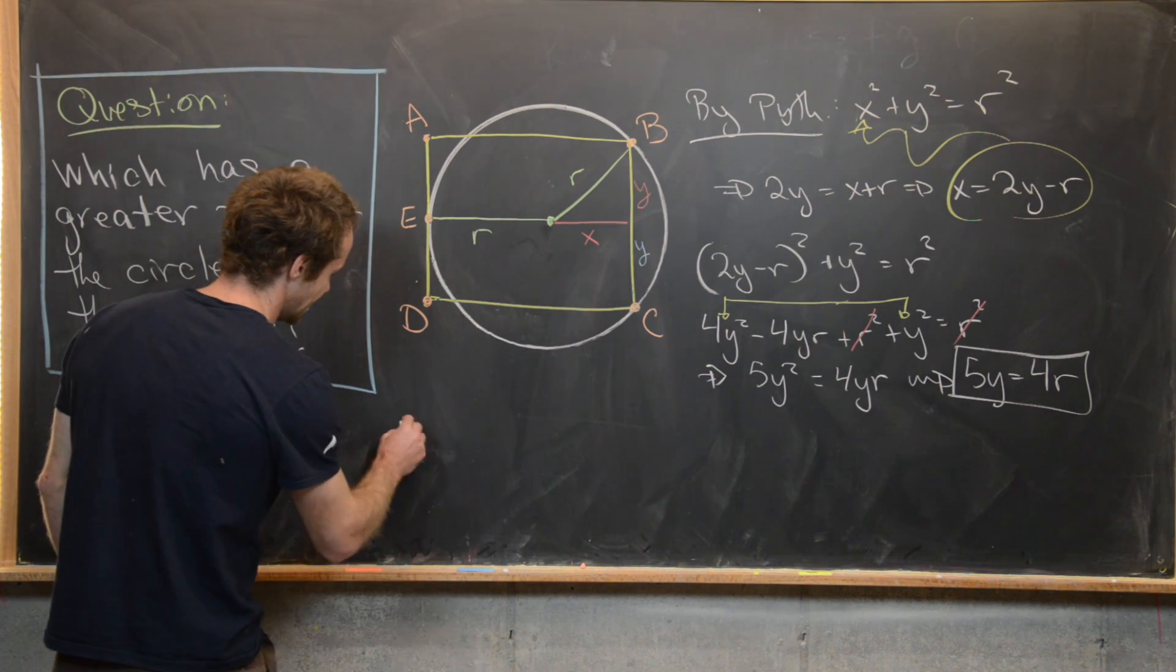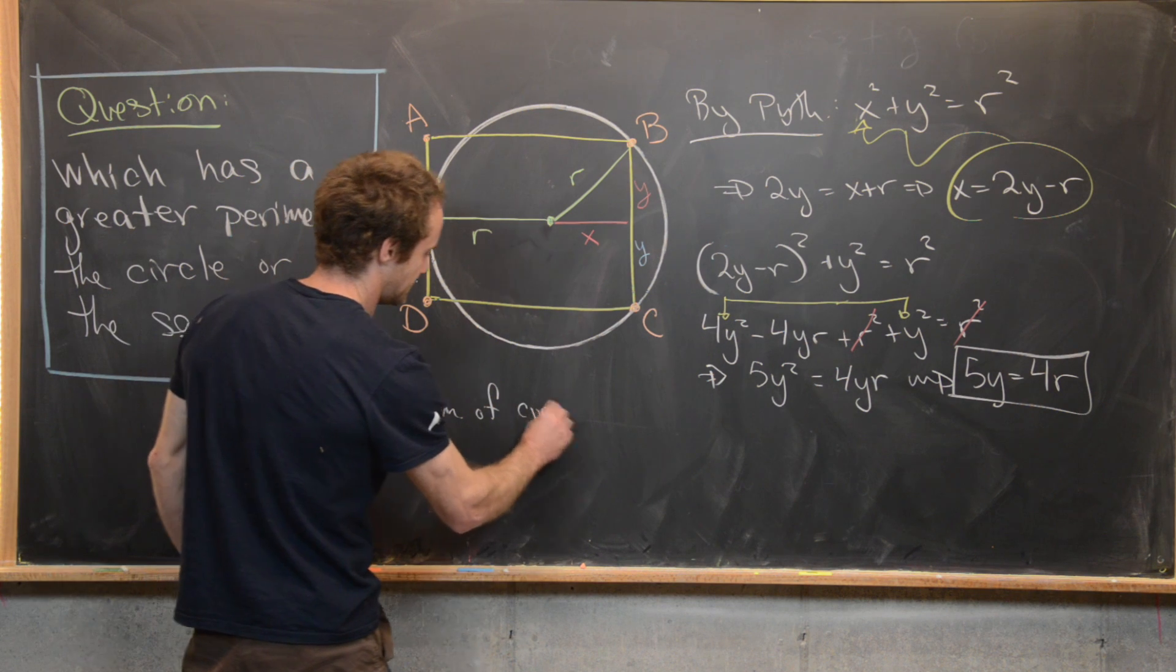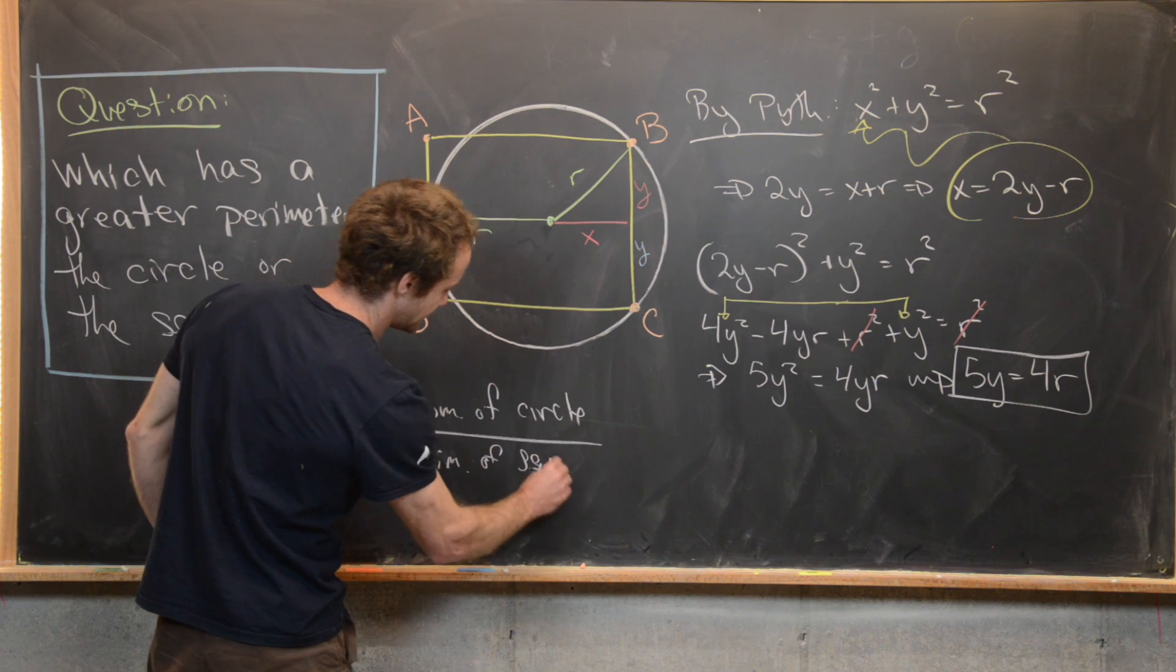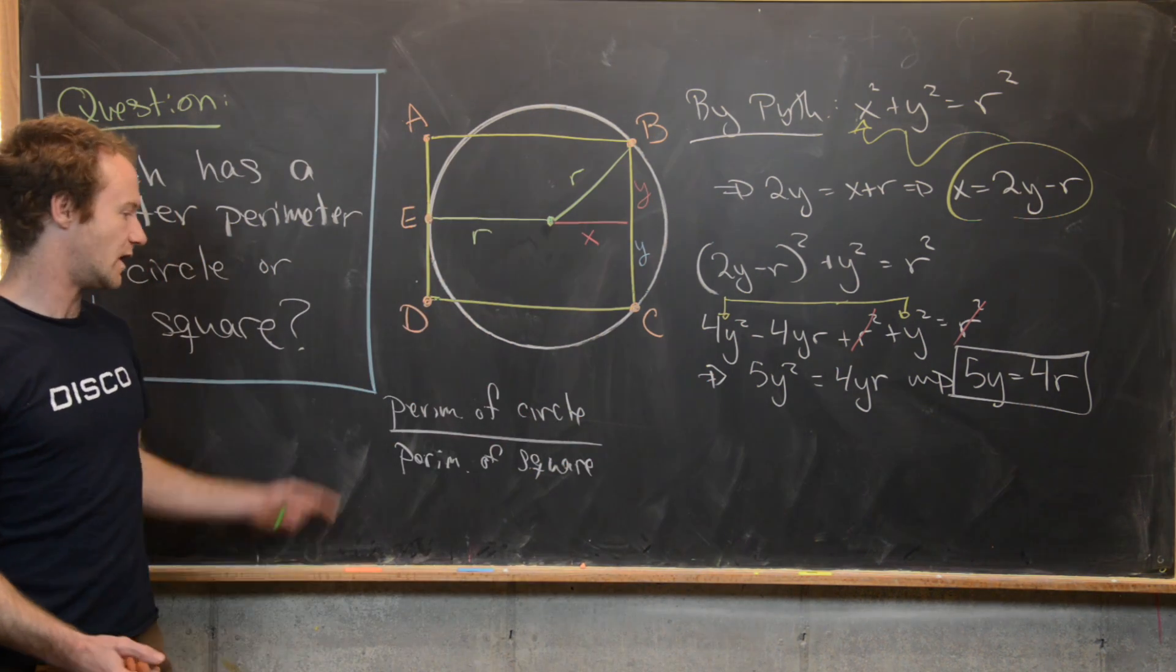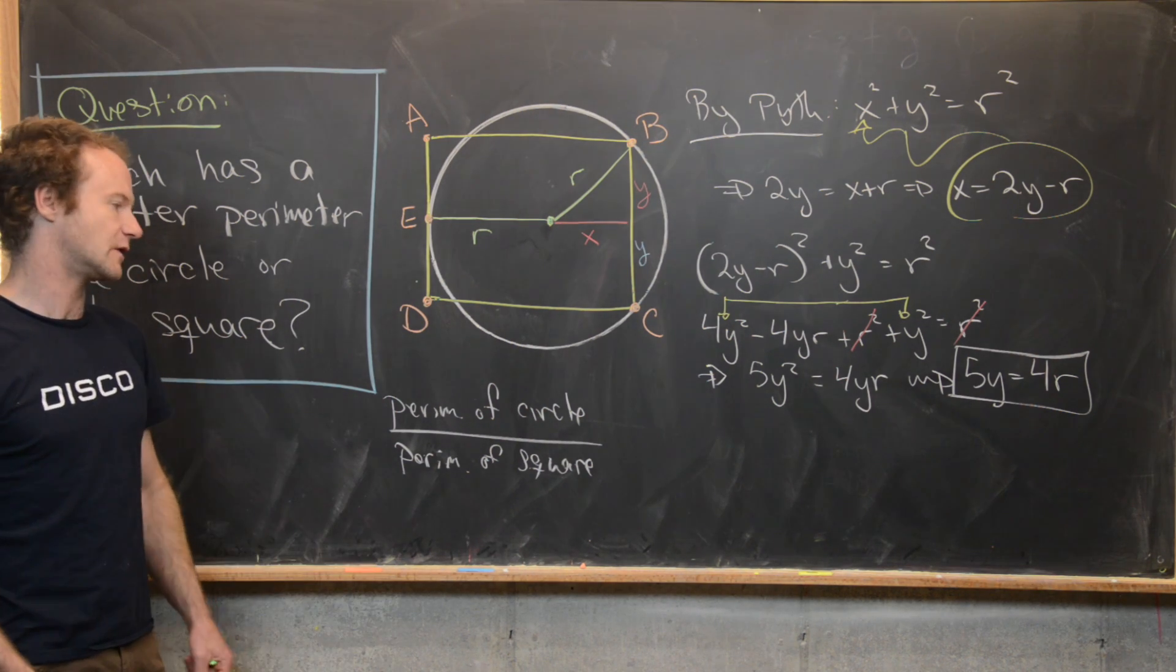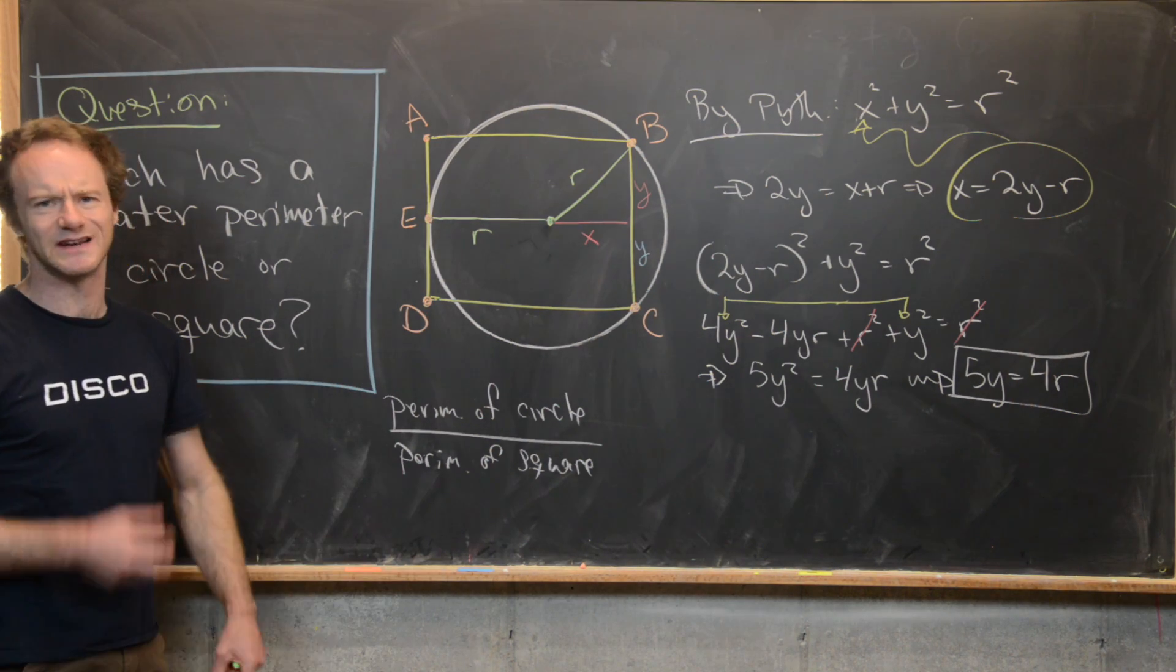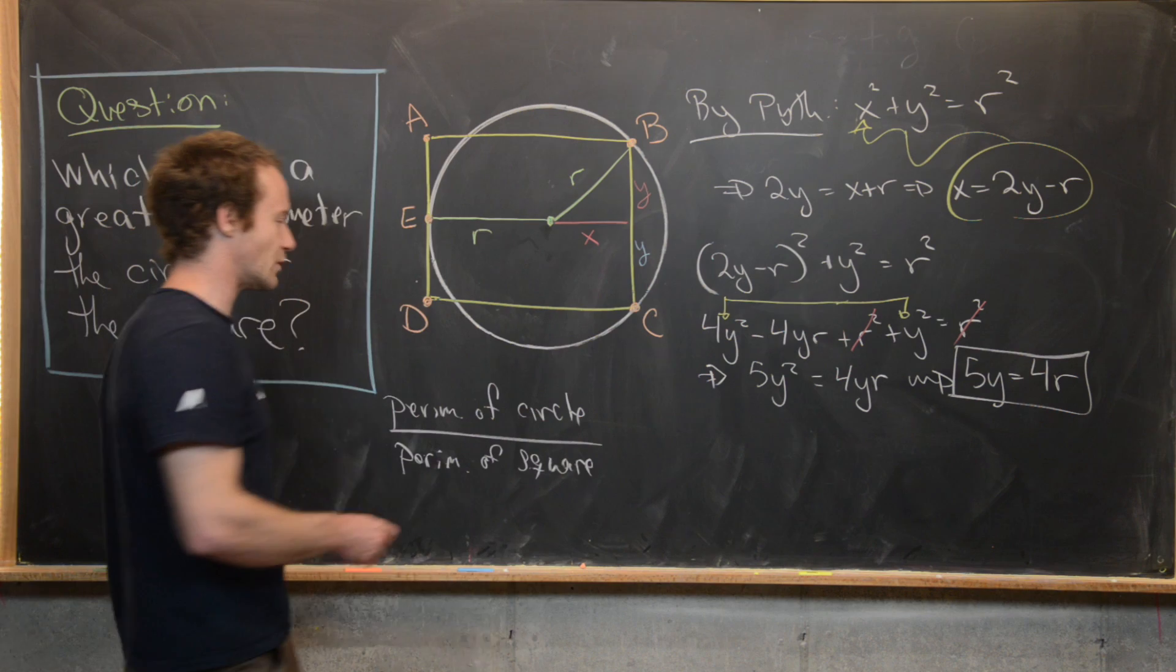Now what I want to do is look at the perimeter of the circle divided by the perimeter of the square. If we can show that is less than 1, then clearly the perimeter of the square is larger. But if it's greater than 1, then clearly the perimeter of the circle is larger. But it's easier to look at this ratio instead of doing the calculation without the ratio.